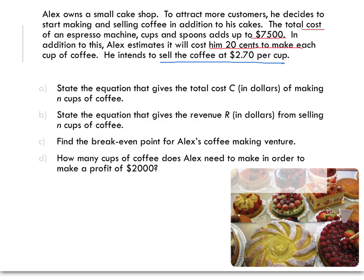When we go to do the questions now, we can see part A asks us to state an equation that gives the total cost of making n cups of coffee. So that's our cost information from the top. Our cost, if we say C is our cost, will be the fixed $7,500 plus the additional 20 cents per cup. So, C = 7500 + 0.2n.